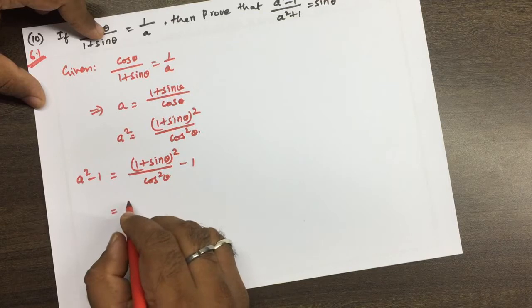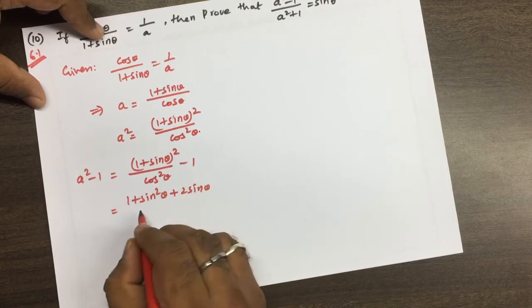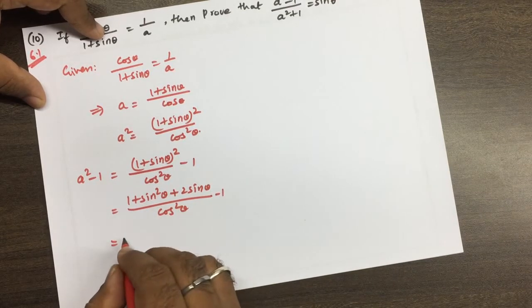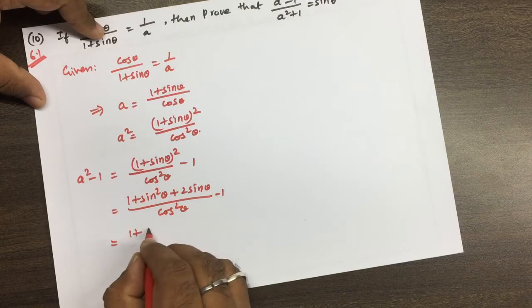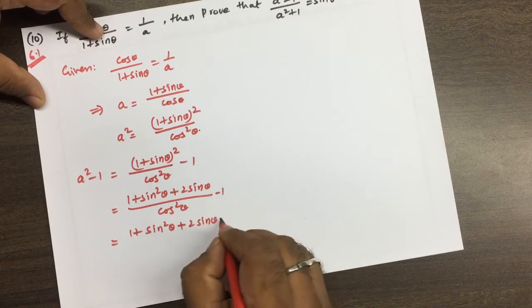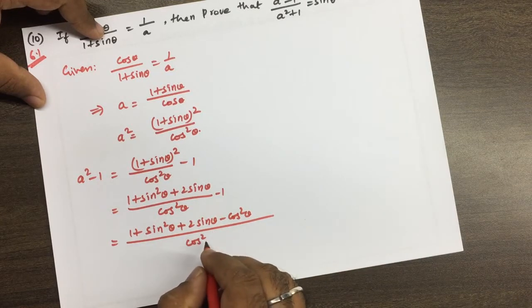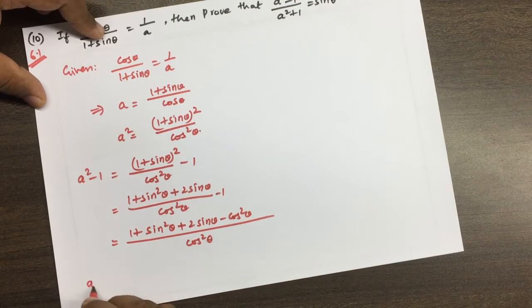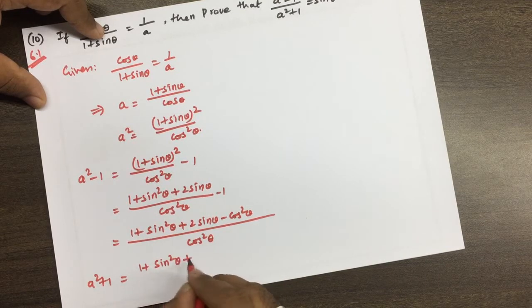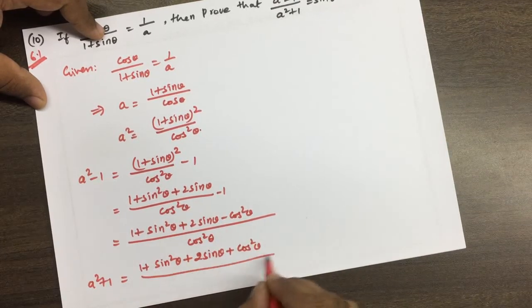The expansion is: (1 + sin²θ + 2 sin θ) / cos²θ minus 1, giving us a² - 1. Similarly, a² + 1 is (1 + sin²θ + 2 sin θ + cos²θ) / cos²θ.